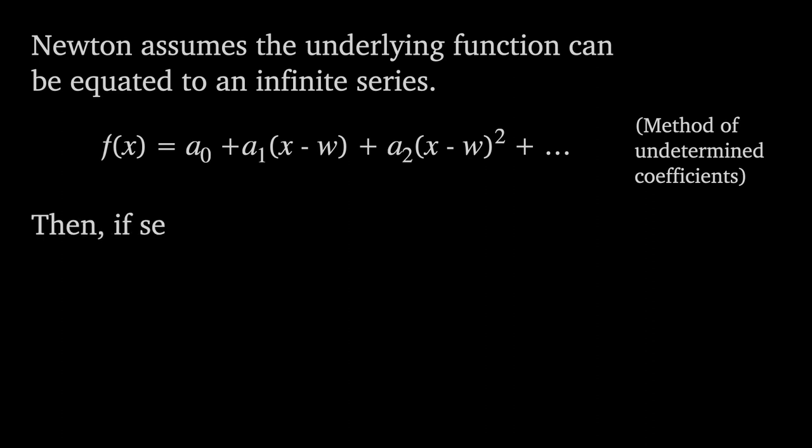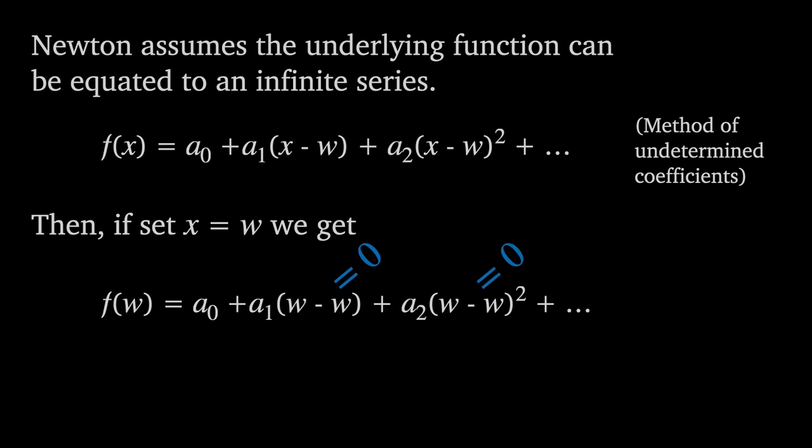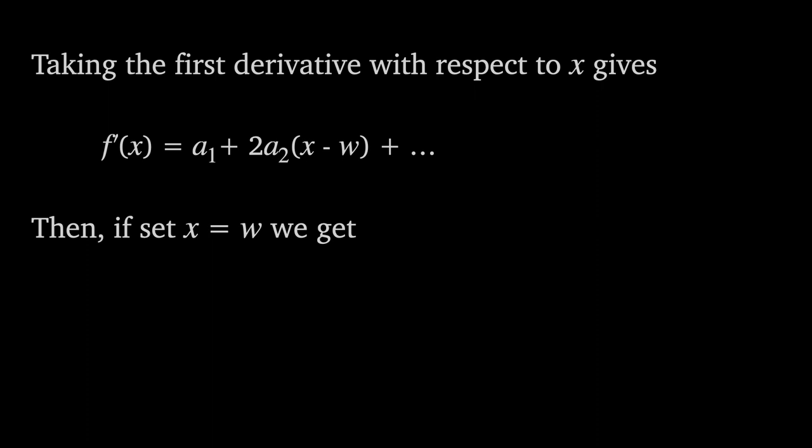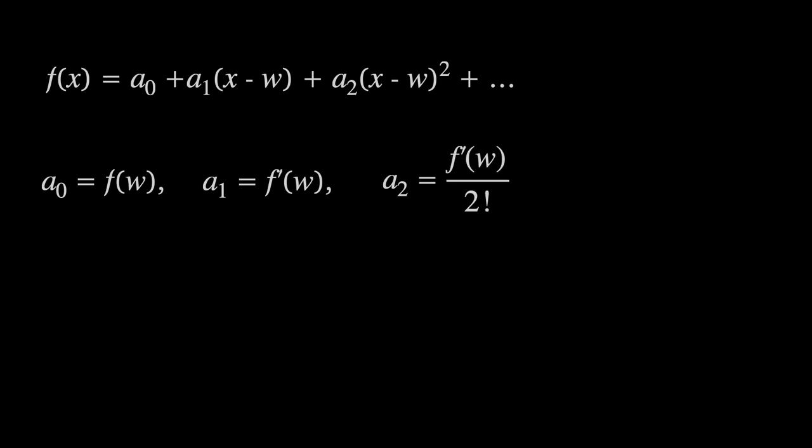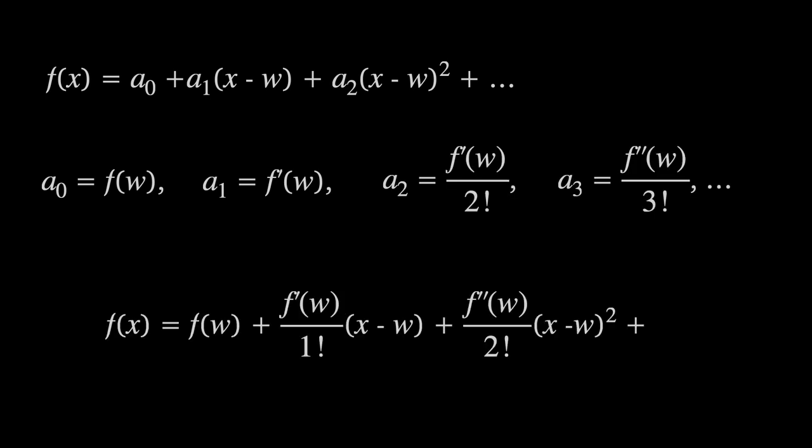We start by setting x equals w, which removes all the coefficients apart from a0, and this shows that a0 is equal to f of w. Next, we take the first derivative and again set x equals w to get a1. To get the other coefficients just involves repeating the same procedure with higher and higher derivatives.